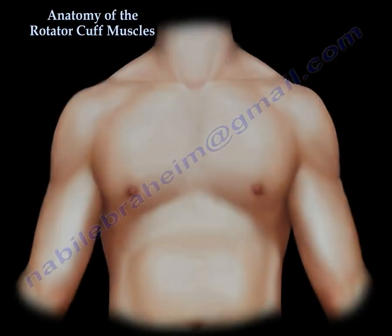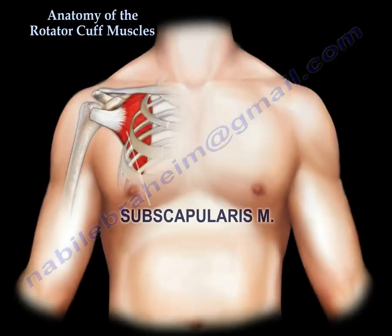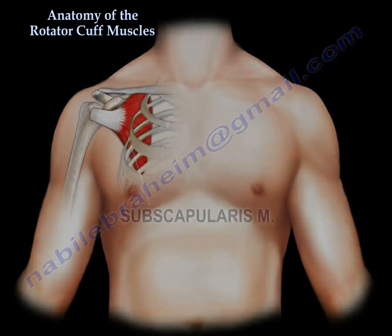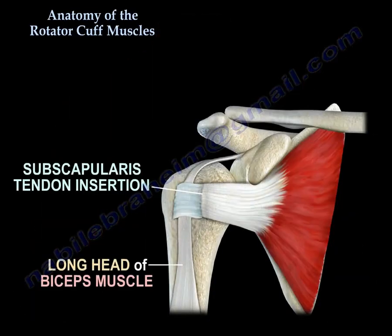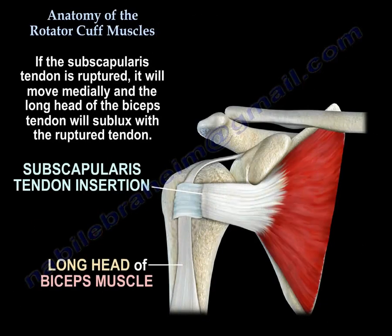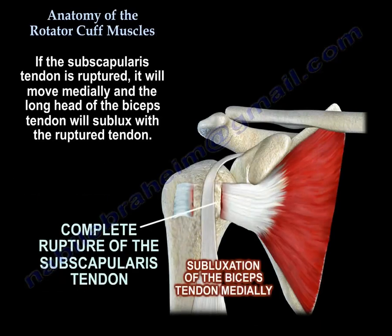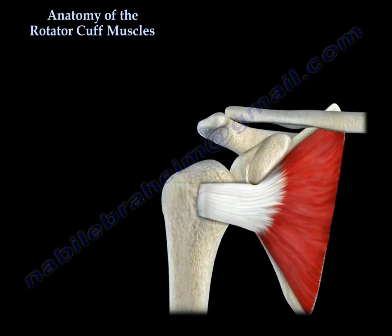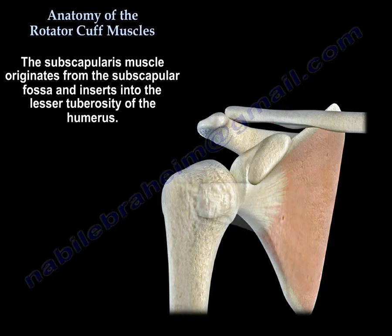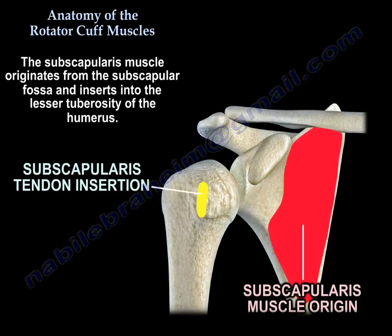The subscapularis is the last muscle. Next to it is the biceps tendon, so if the subscapularis ruptures and moves medially, the biceps tendon will also be dislocated or subluxed medially. The subscapularis originates from the subscapular fossa and inserts into the lesser tuberosity of the humerus.